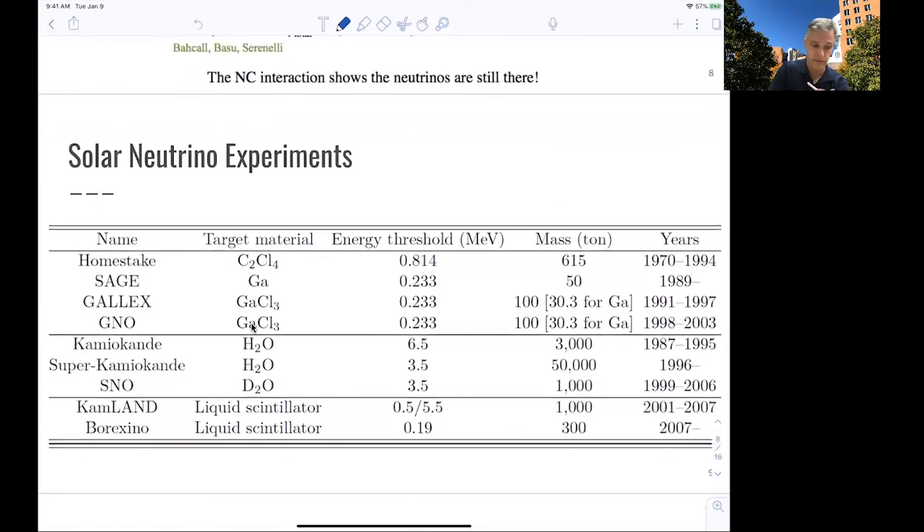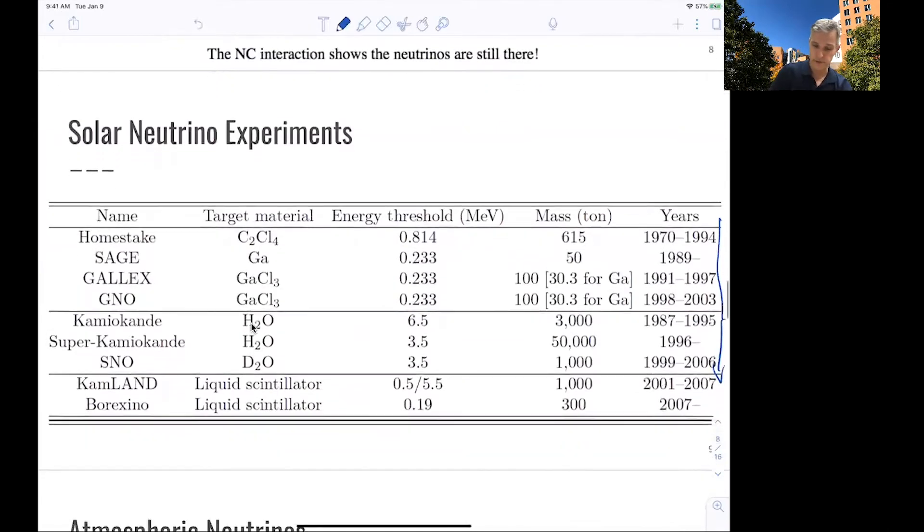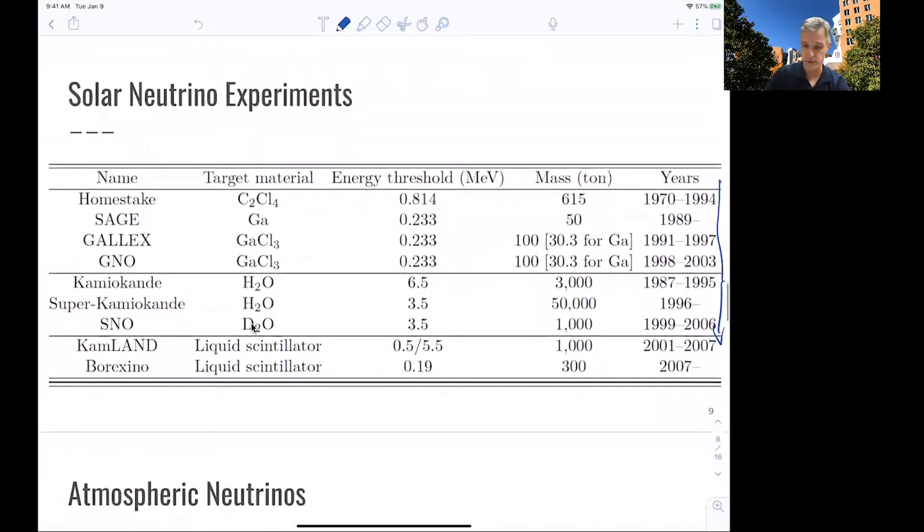By now, this first experiment was Homestake. By now, there is a larger number of solar neutrino experiments. And you see it's a long time of neutrino studies. Different materials are being used. Different energy thresholds being tested. Different scale of the experiments. And the experiments become more sensitive the larger they are. And so this is something you can see from this table.